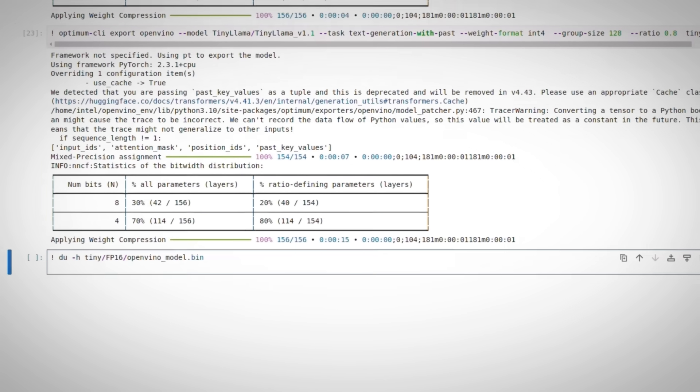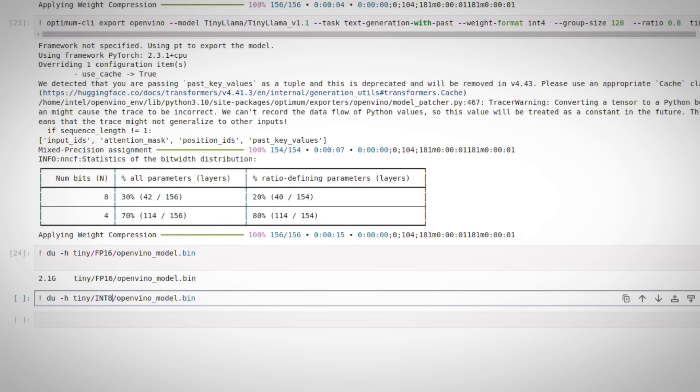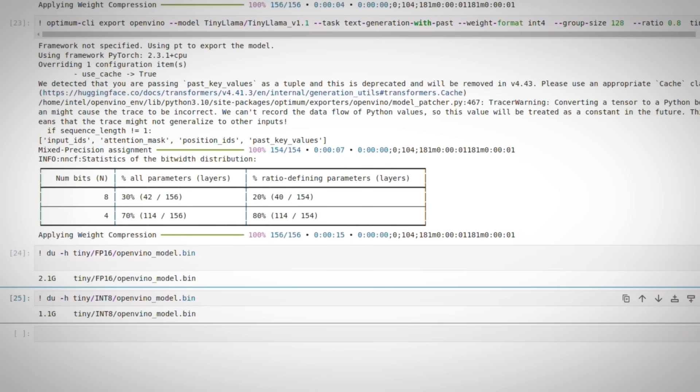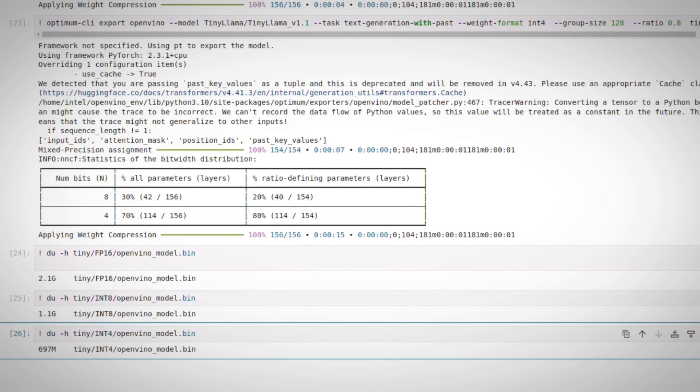FP16 model is at 2.1 gigabytes. INT8 is half the size with 1.1 gigabytes. And the INT4 model is down to 700 megabytes. Pretty cool and can now fit into any laptop.